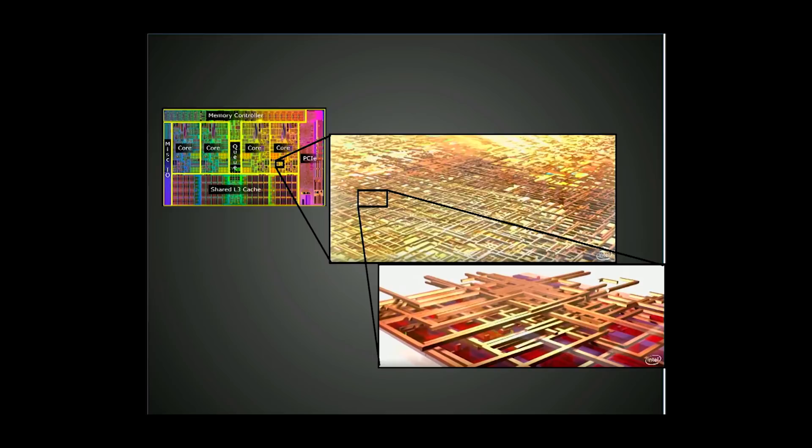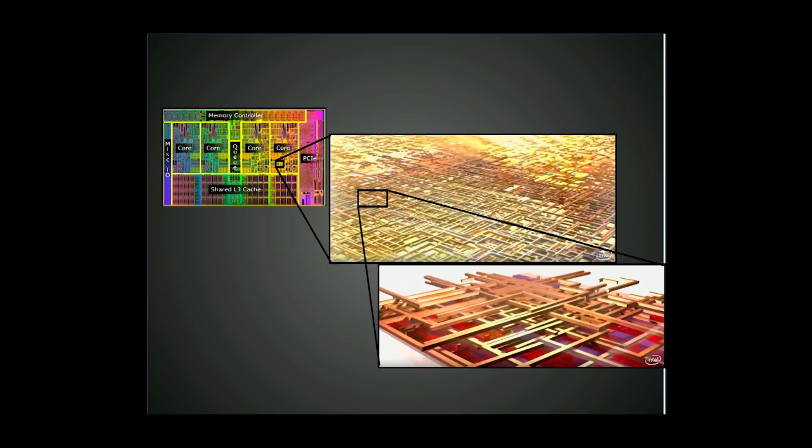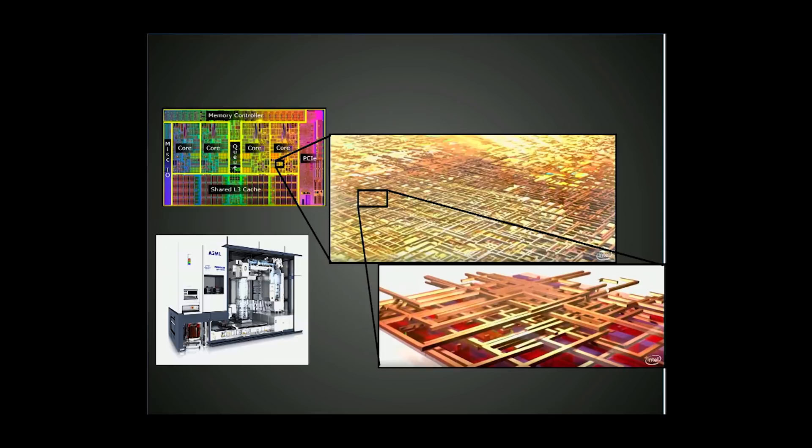Now, if you want to make a processor, you just need a few billion dollars and machines like this, and you're good. If you want to reverse engineer it, you could use a machine called a FIB-SEM, which I'll be discussing in more detail.